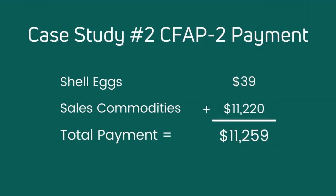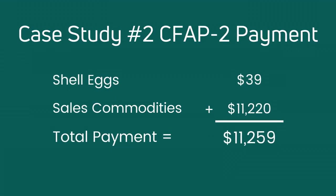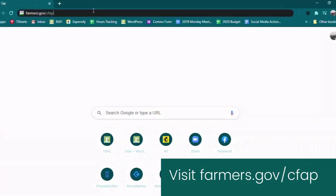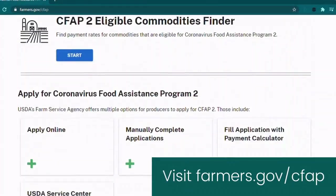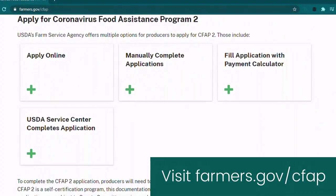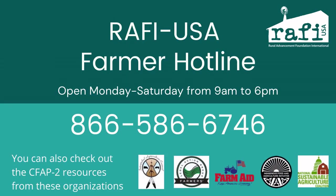In total, this farmer would receive $11,259 for the two commodities. These are just two quick examples of what a farmer's payment might look like. Farmers can visit Farmers.gov/CFAP for more information about eligible commodities and how payments are calculated. If you have additional questions about CFAP II or need assistance with your application, we encourage you to call the RAFI USA hotline toll-free at 866-586-6746.